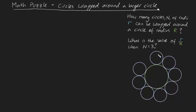So basically what I'm asking is, how many of these blue circles will it take to completely wrap around this green circle? And then once you've found this value of N, what is the value of r/R when N equals 3?